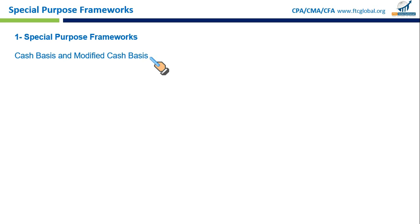Let's discuss some common types of special purpose frameworks. First, we have cash basis and modified cash basis. In cash basis accounting, revenues and expenses are recorded when cash is actually received or paid. For example, a small shop might use cash basis accounting, only recording sales when customers actually pay cash.